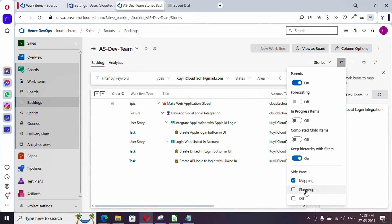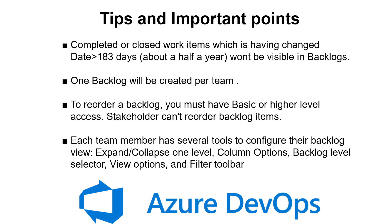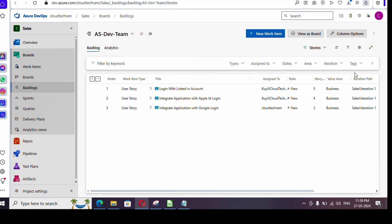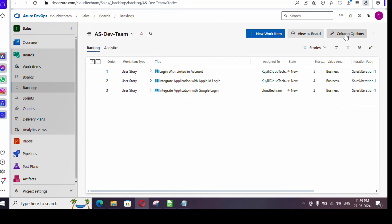Forecasting and planning are two options left which we will see in our next video. Now let's see tips and important points. Closed or completed work items won't show up in the backlog after 183 days of last modified. If you close a ticket today, it will show for the next 183 days; after that you can query it or make a minor change to reset the clock. If you have Stakeholder access, you can't use the reorder option — you need at least Basic access or higher.